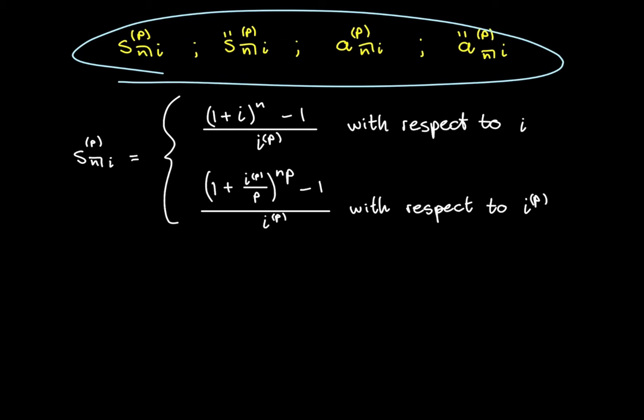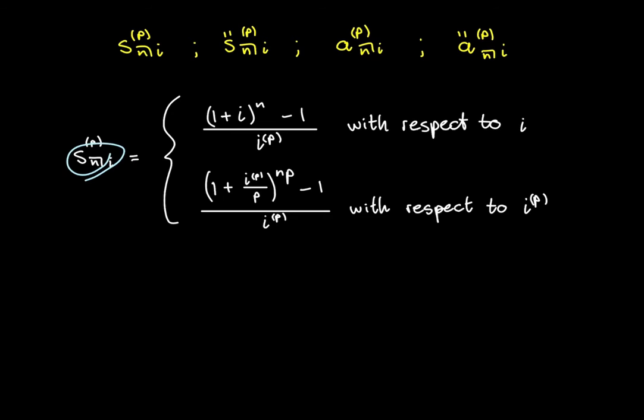And I'm also going to give you the formulae for these annuities payable pthly as well. So let's start with this annuity, which is a future value annuity paid in arrears, and that's payable pthly at the interest rate i for n periods.